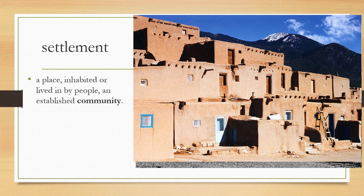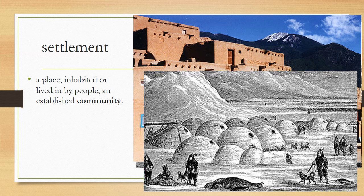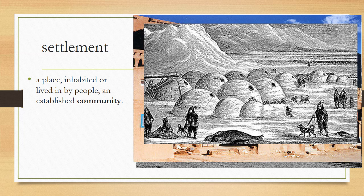Here's a settlement of Pueblo homes, another Native American dwelling place. And finally, here is a settlement of igloos.